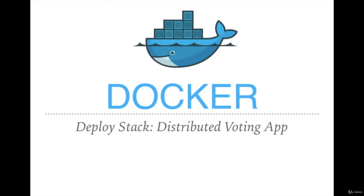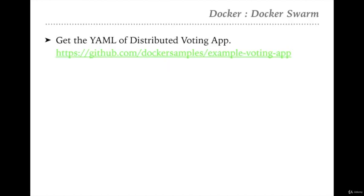Hello team, welcome back. In the last lecture we solved the persistent data issue with Docker Swarm. Today we will see how we can deploy a complete stack in Docker Swarm. We are going to deploy the distributed voting app which we have already deployed in some of our assignments, but over there we deployed it in multiple commands. Today we will see how we can deploy the complete distributed voting app with a single command. I've mentioned the GitHub code location of the distributed voting app, and I will attach the PDF as a resource for this lecture.